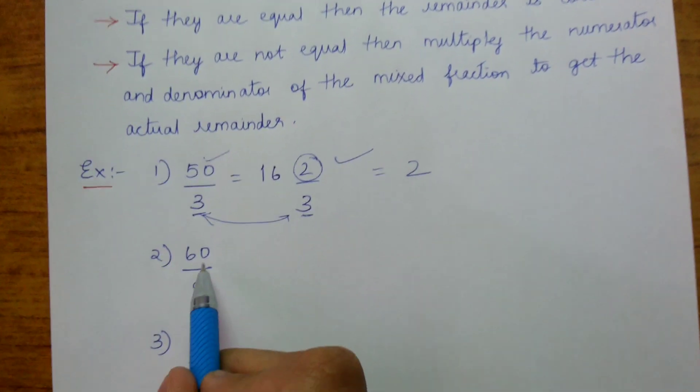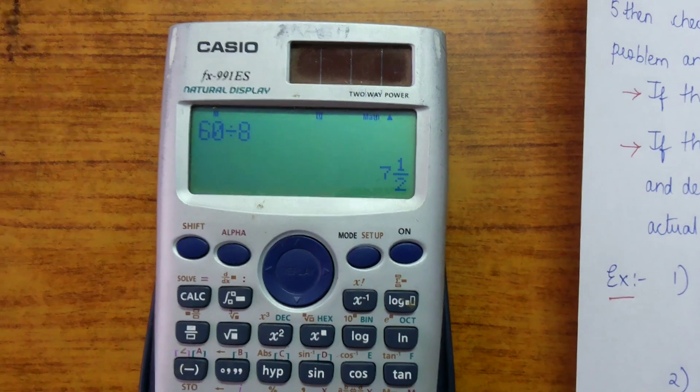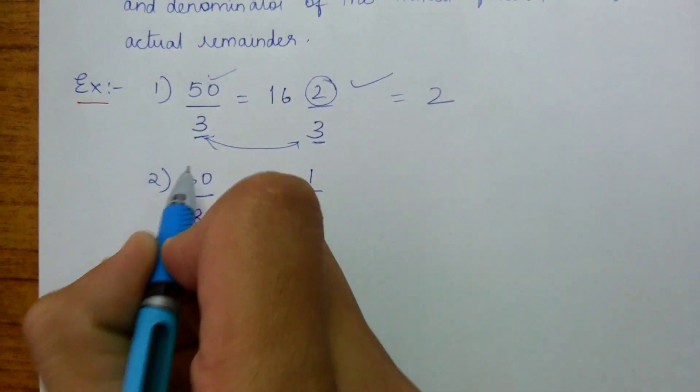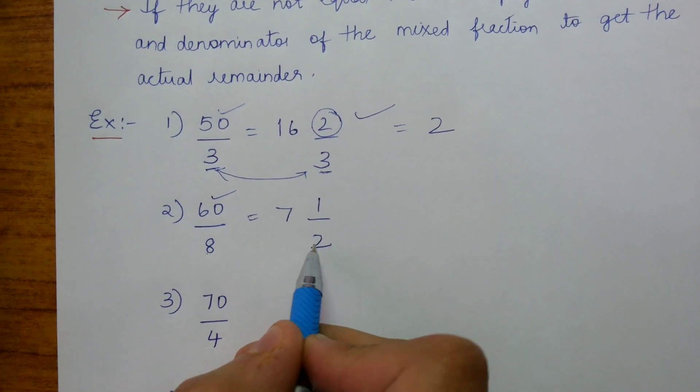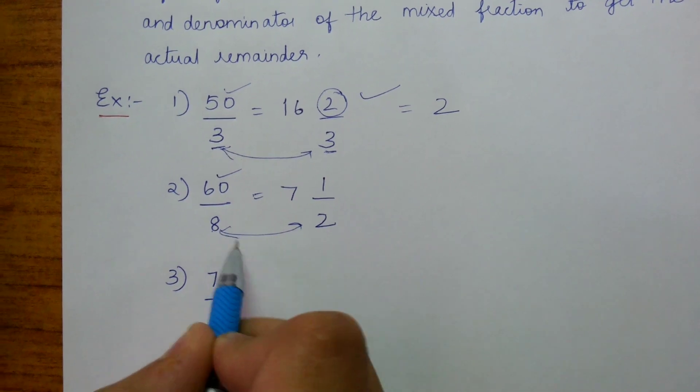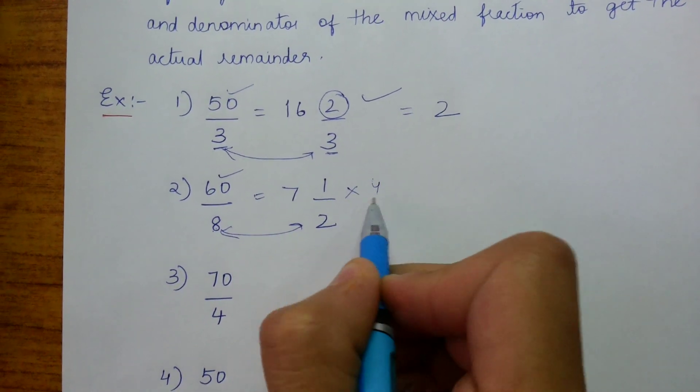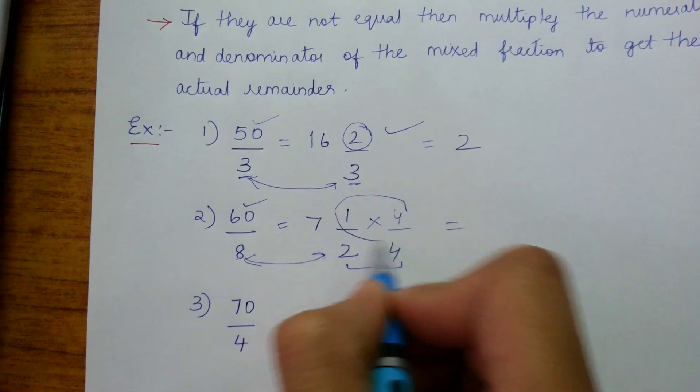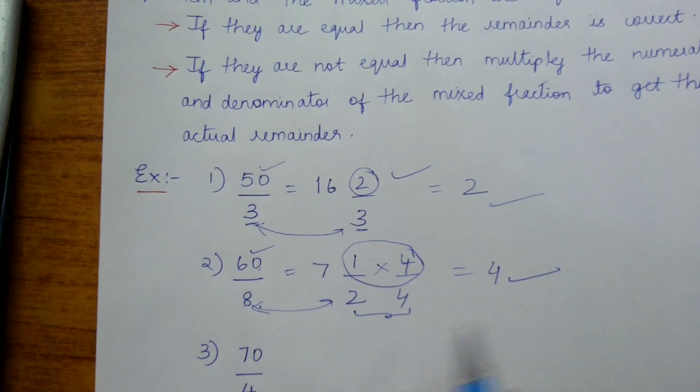Now coming up to the next problem, 60 divided by 8. Let us see. 60 divided by 8. I am getting 7 1 by 2. So this is a multiple of 5. 60 is a multiple of 5. We are checking the denominators of the problem and the mixed fraction. They both are not equal. It is 8 and it is 1 by 2. So I am going to multiply it with 4 by 4 in order to make this 8. So on top, it has become 4. Hence the remainder of 60 by 8 is 4, which is satisfied.